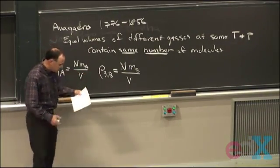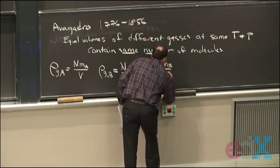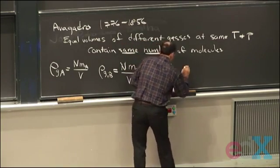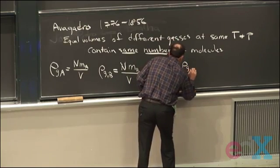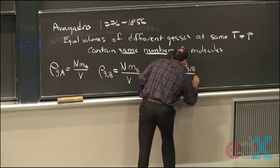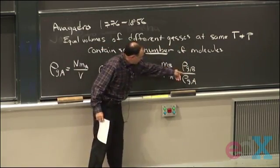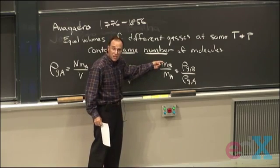So if I can measure these densities by just taking a ratio here, I can measure the densities of each gas, and if I know the mass of one molecule, I can get the mass of the other.